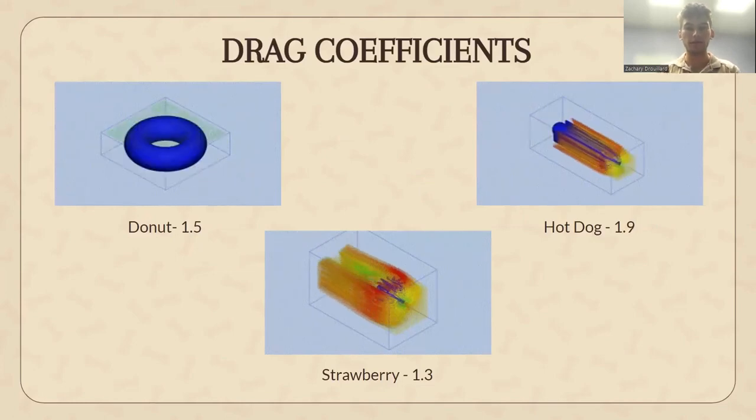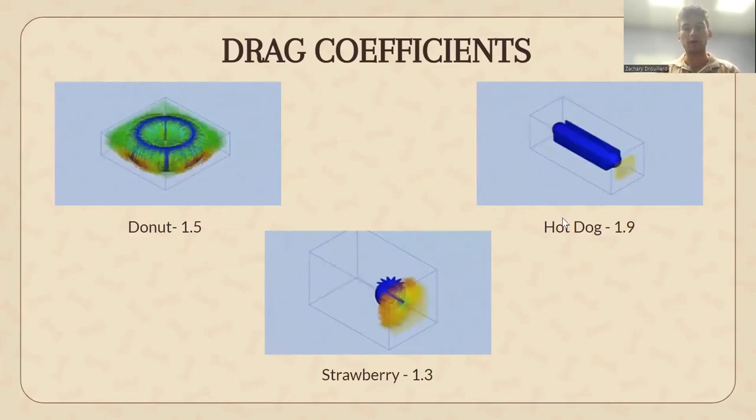Three different foods were selected to be first 3D modeled and then ran through wind tunnel simulations in a computational fluid dynamics software. The foods picked included the hot dog, the donut, and the strawberry. Their calculated drag coefficients are given, found from the total frontal area of the object, the density of air at standard temperature and pressure, the velocity relative to the fluid, as well as the drag force found from the wind tunnel test.